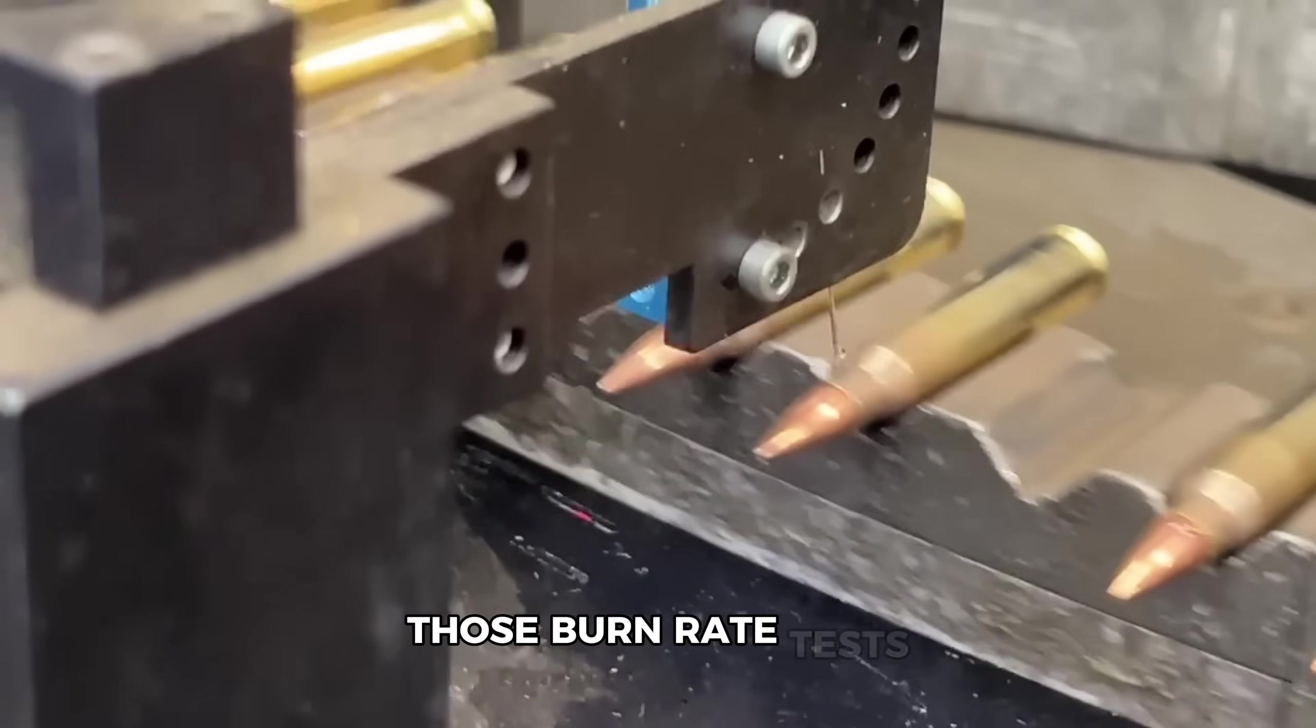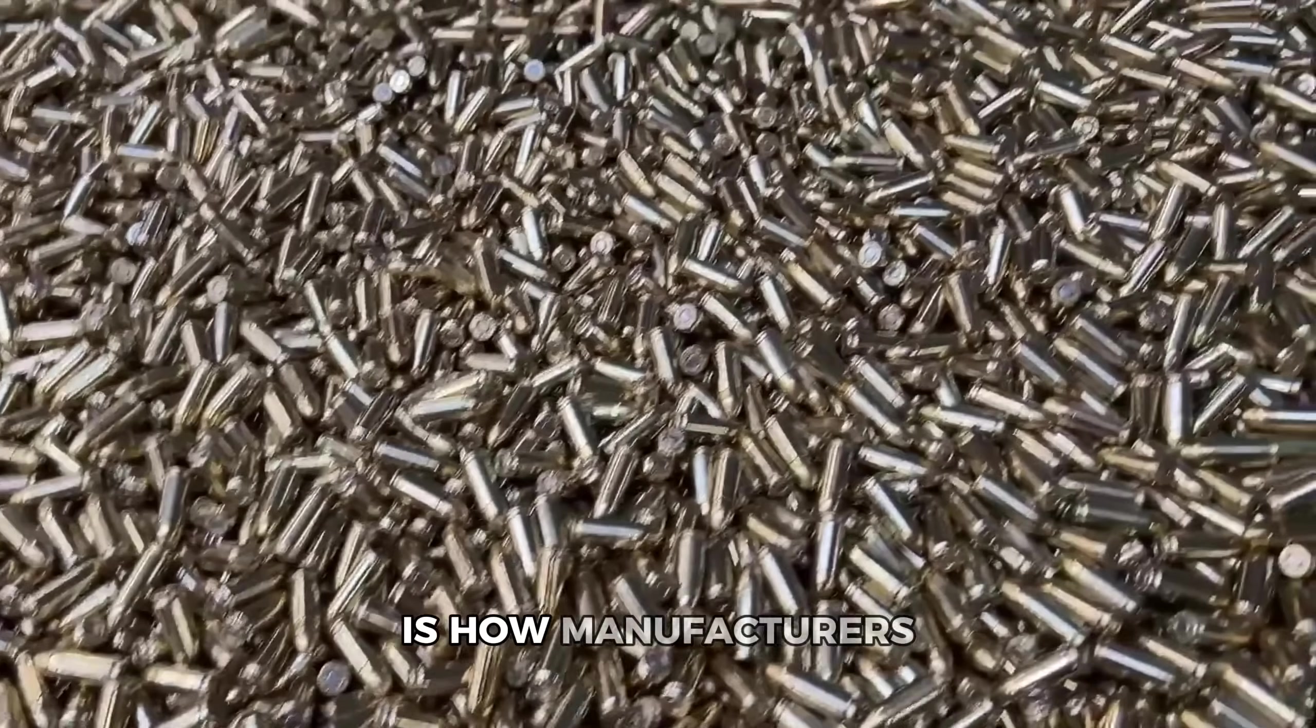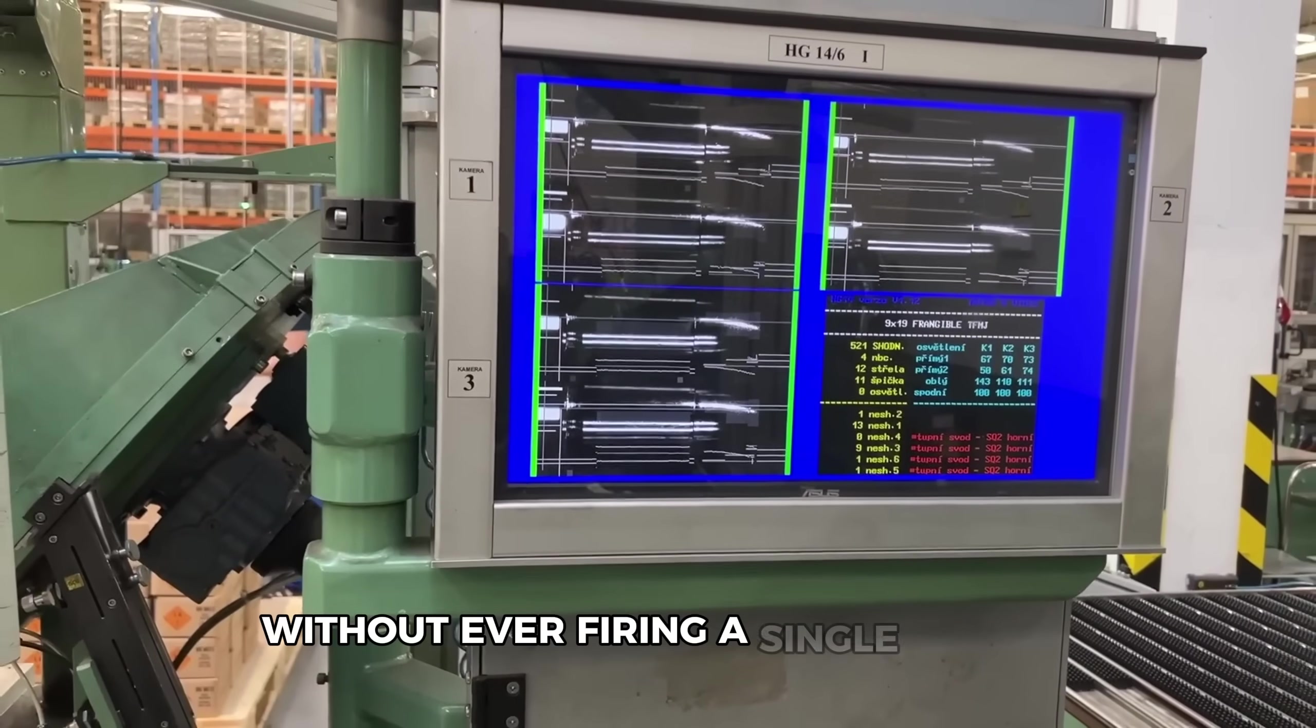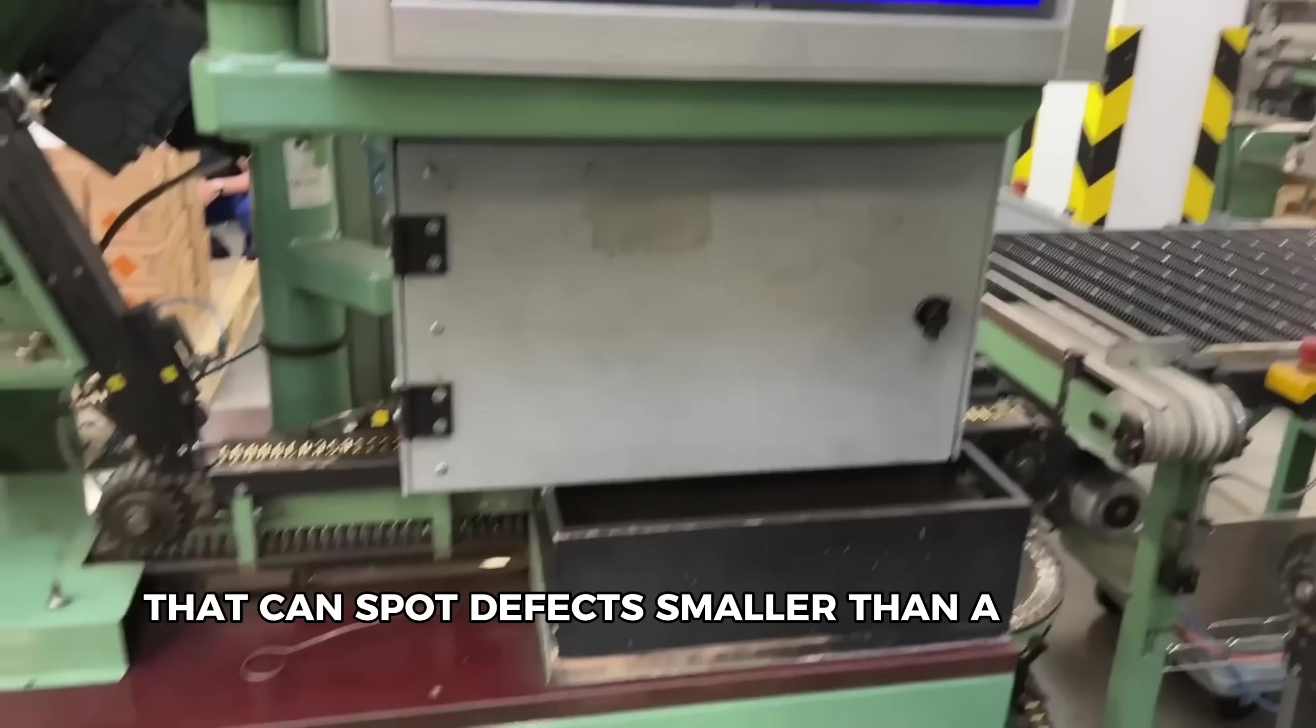Those burn rate tests are just the beginning of quality control. What's truly mind-blowing is how manufacturers can detect potentially dangerous ammunition without ever firing a single round. And it all comes down to a testing method that can spot defects smaller than a human hair.